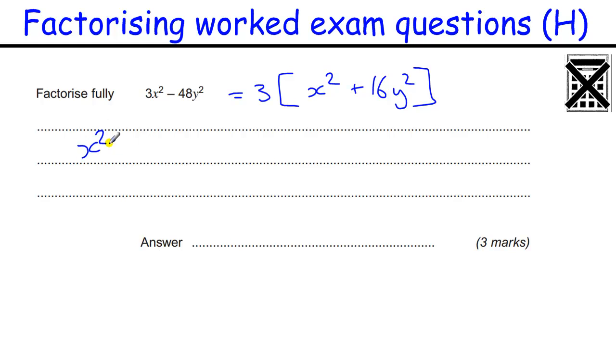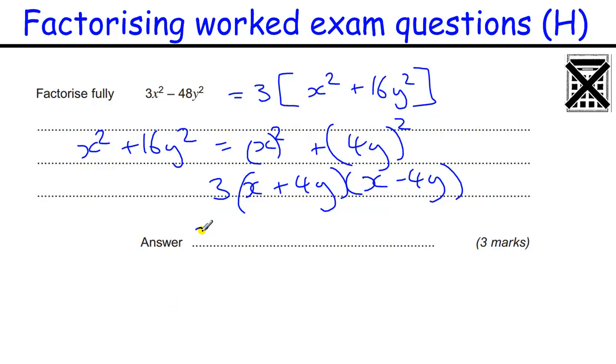So if I just deal with this, x squared minus 16 y squared, that can be rewritten as x squared minus 4Y all squared. Because 4Y times 4Y is 16Y squared. And there's my two A's and B's. So I've got x plus 4Y and x minus 4Y. And the 3 that I took out to start with, I just put on the front. So I get three lots of x plus 4Y and x minus 4Y. Fairly straightforward when you can see it. But until then, it's very tricky. OK. Thank you.